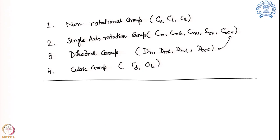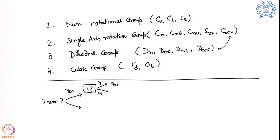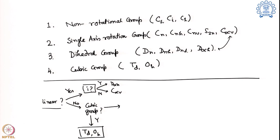These are the four groups in which all our molecules can mostly be distributed. The question is how to find out the point group, and we do that by particular questioning. First we ask whether the molecule is linear or not. If yes, we ask whether it has a centre of symmetry: if yes it is D∞H, if no it is C∞V. If the molecule is not linear, the next question is whether it belongs to a cubic group — tetrahedral or octahedral geometry.